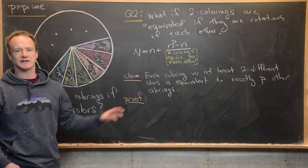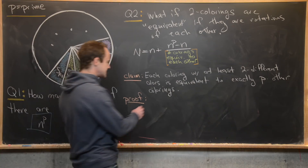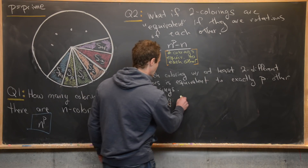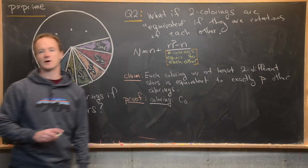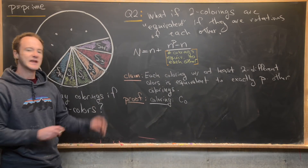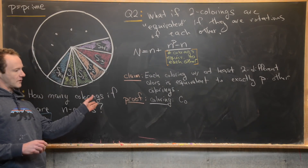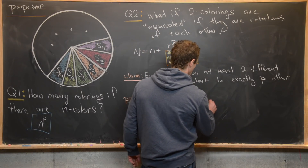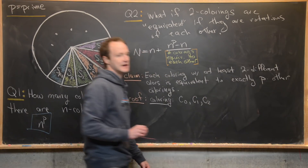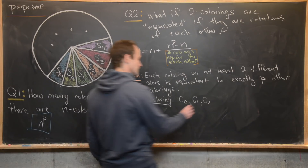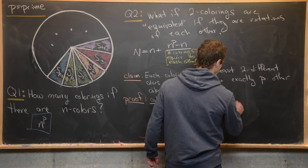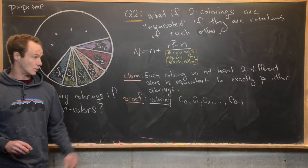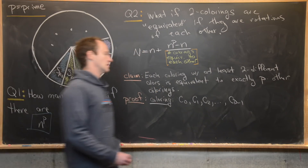Let's see how to do this. Say we've got some coloring of the circle, and we call it C0. We can rotate it one over P around the circle to get coloring C1. Rotate again to get C2. And we can rotate all the way up to CP minus one. So here we've got P colorings, and we need to show two things.